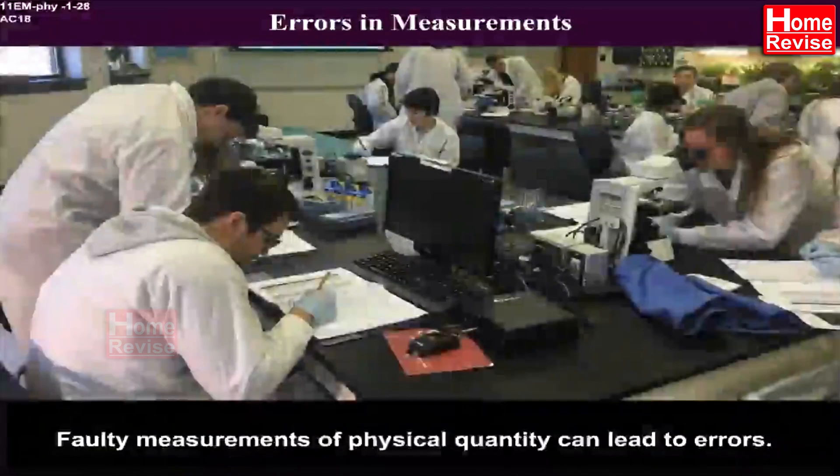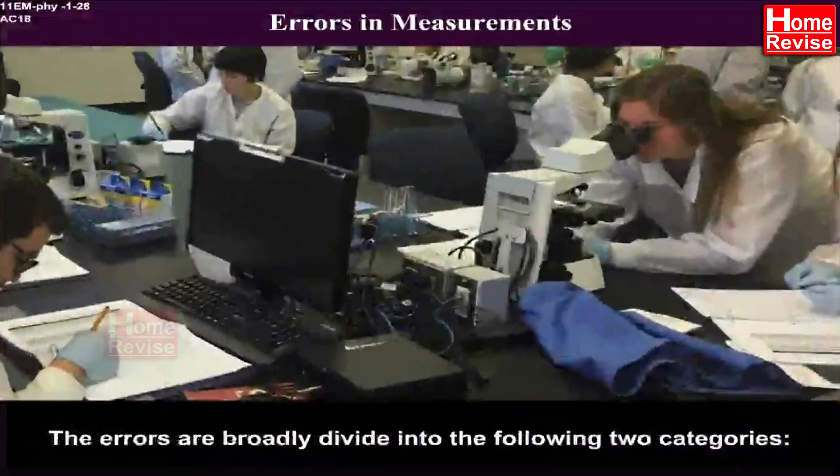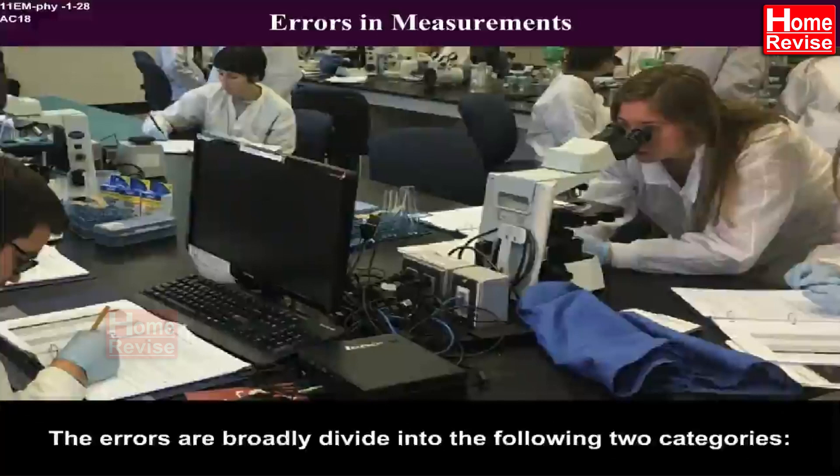Errors in measurements. Faulty measurements. Faulty measurements of physical quantity can lead to errors. The errors are broadly divided into the following two categories A. Systematic errors